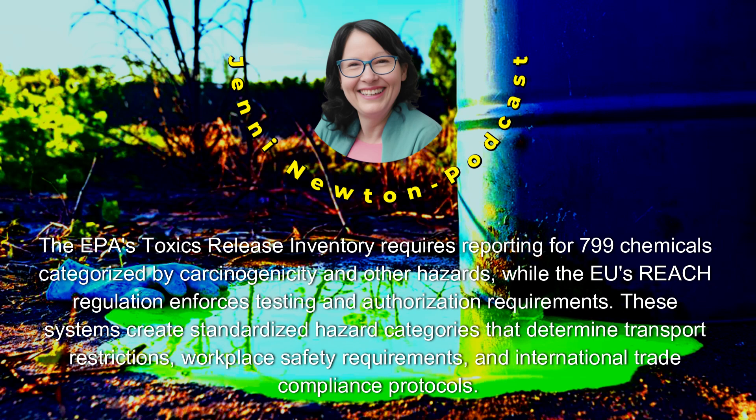The EPA's Toxics Release Inventory requires reporting for 799 chemicals categorized by carcinogenicity and other hazards, while the EU's REACH regulation enforces testing and authorization requirements. These systems create standardized hazard categories that determine transport restrictions, workplace safety requirements, and international trade compliance protocols.